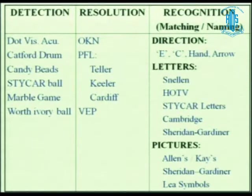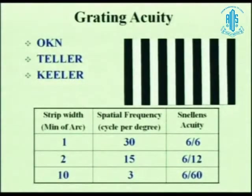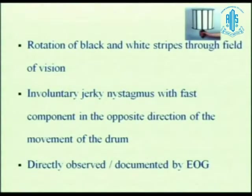Allen Preschool, Lea Symbols, K Picture Chart — these are all different ways of doing the same thing. Published data by Teller et al. describes grating visual acuity. On a Teller acuity card or Keeler's acuity card, the strip width in minutes of arc is used: one minute of arc equals 30 cycles per degree, and Snellen's acuity is 6/6. If you have an OKN drum and rotate it, and a normal OKN is produced, you know the kid has good visual acuity. The finer the stripes, the better the visual acuity. However, you can have false positives even in cortically blind patients — parietal lobe lesions may show OKN symmetry, whereas occipital lobe lesions would show OKN asymmetry.